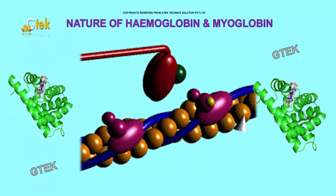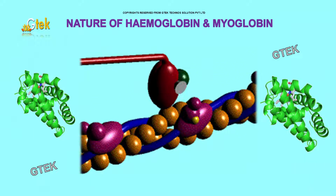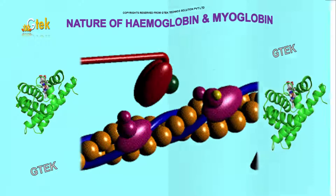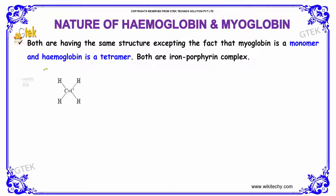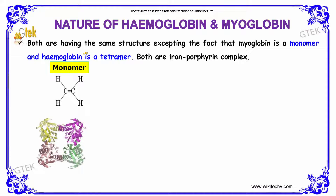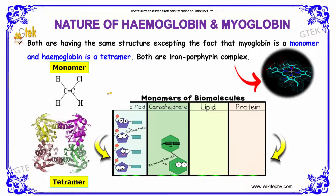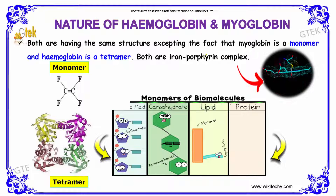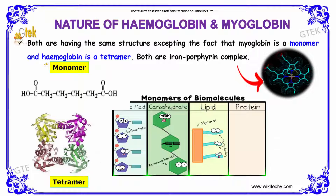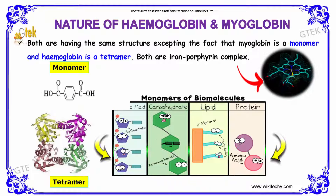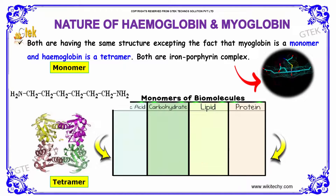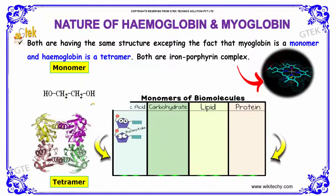The nature of hemoglobin and myoglobin: both have the same structure, except that myoglobin is a monomer and hemoglobin is a tetramer. Both are iron-porphyrin complexes.